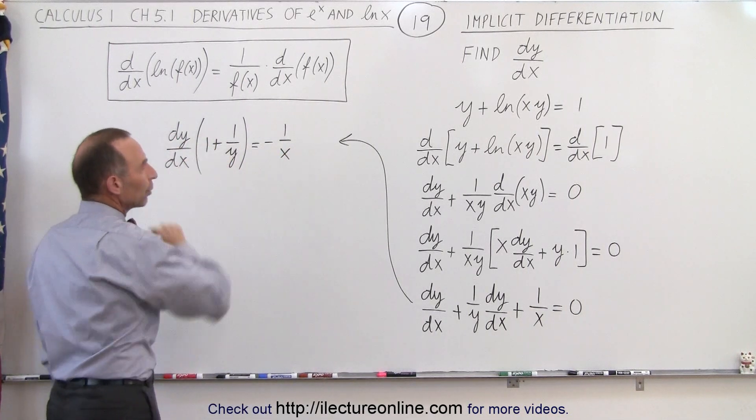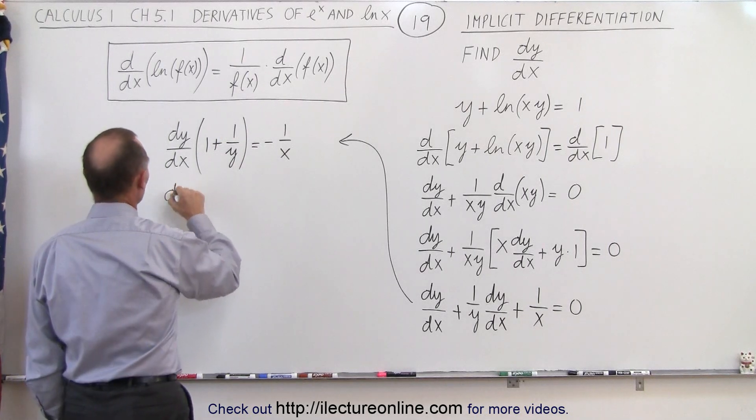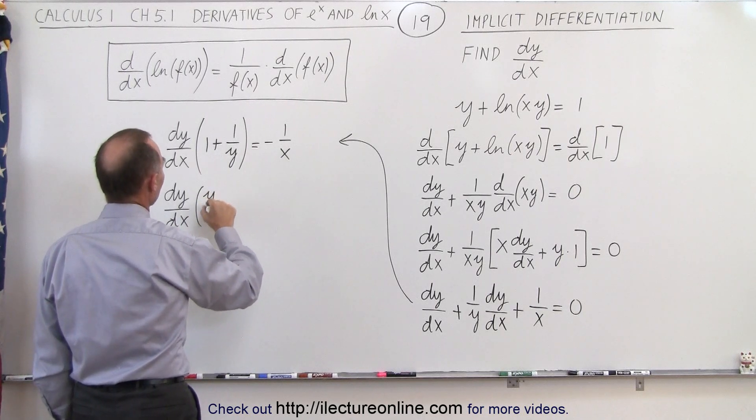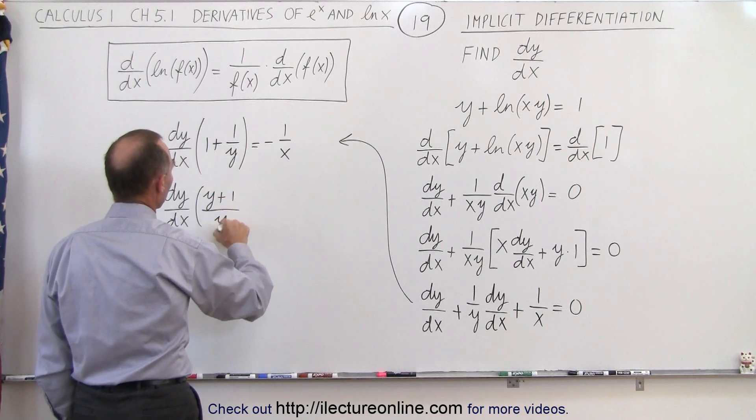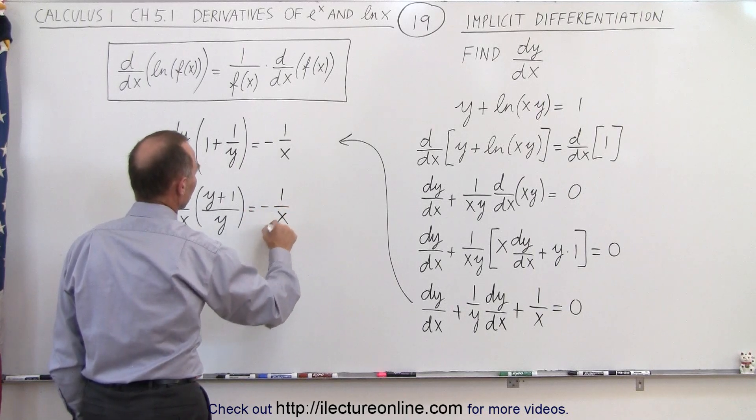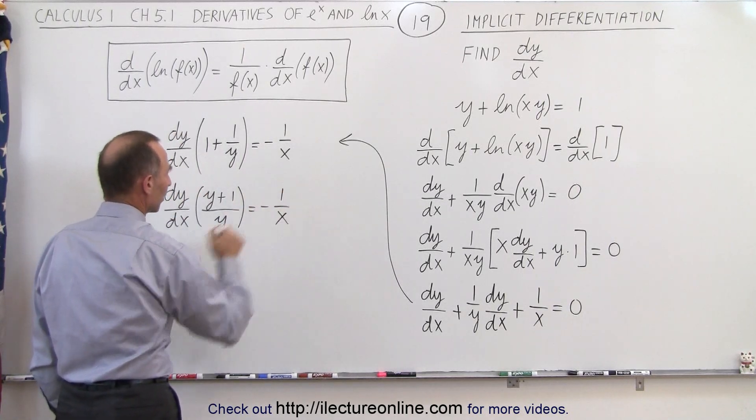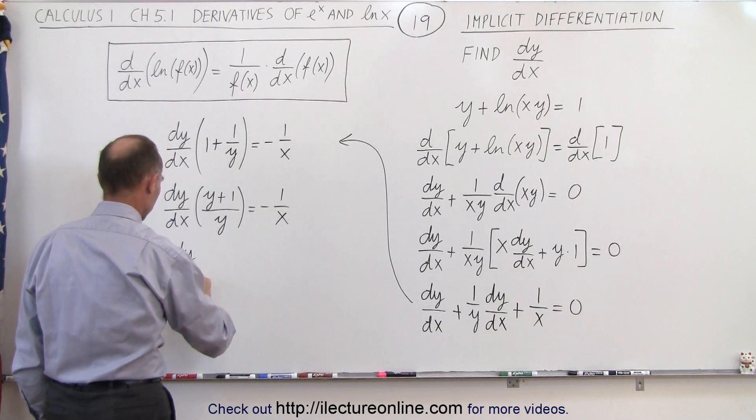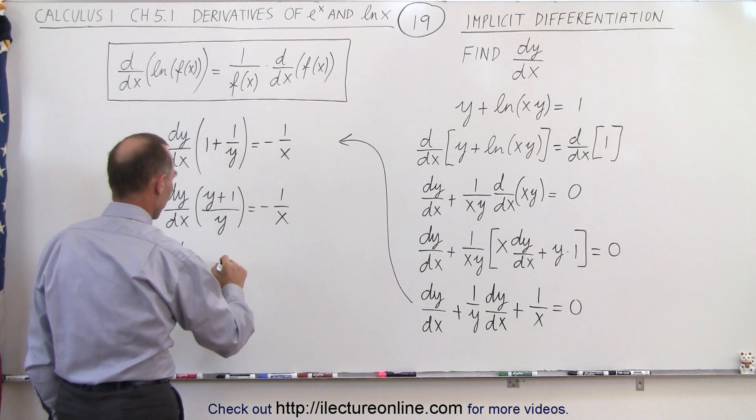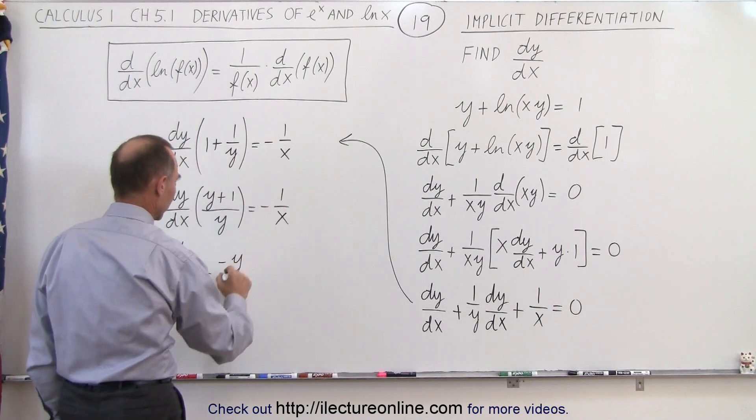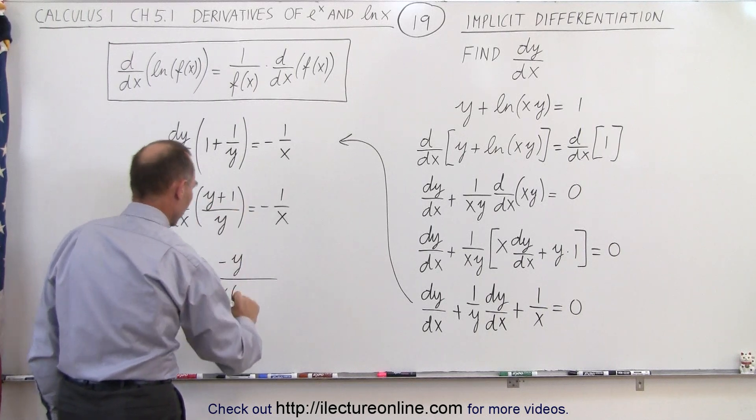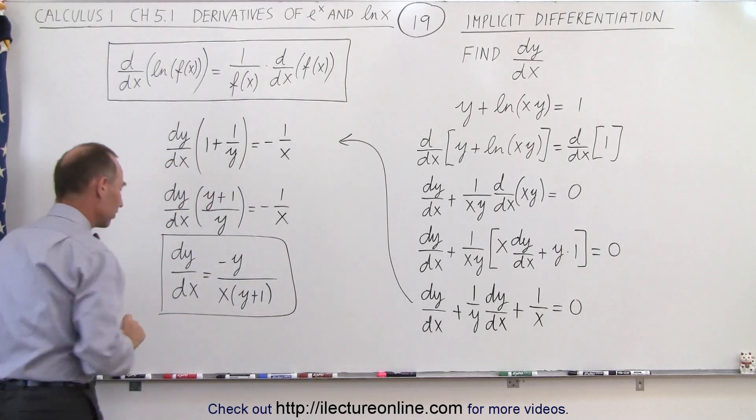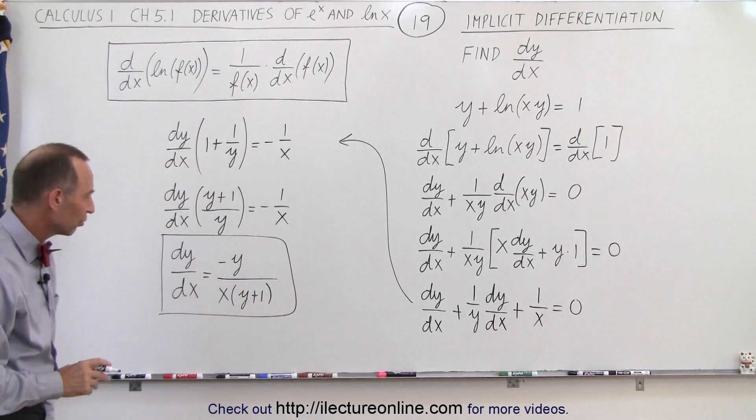Okay, here I think I want to write that over a common denominator, so let's do that. So we end up with dy/dx times, here we have y plus 1 over y is equal to minus 1 over x. And now we can move this to the right side by doing cross multiplication, which means that here we have dy/dx is equal to minus y in the numerator, since that goes over there, divided by x times y plus 1 in the denominator. And that then gives us a nice equation for dy/dx.